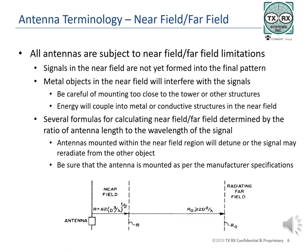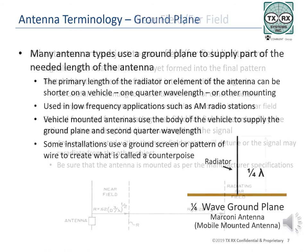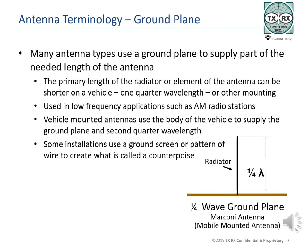An antenna that is mounted too close and is coupling to the tower or other structure will show as out of tolerance when swept. Low frequency operations like AM radio stations use quarter wavelength antennas due to the extremely long wavelength and therefore long antenna length required for half wave construction.